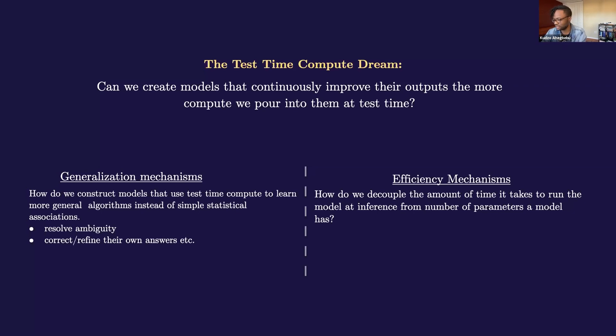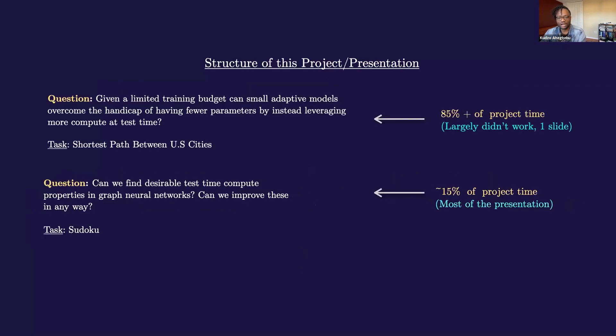Okay, so how did we tackle this question? The overwhelming vast majority of this project was actually spent on something I'll likely only spend a single slide talking about in the interest of time. And that's the shortest path task. The shortest path is a sequence-to-sequence modeling task in which I give the model a pair of tokens representing pairs of US cities, and I expect it to output a sequence of target tokens that represent the shortest path between the destinations. The stuff I'll mostly be presenting on only really took shape in the past three or four weeks, and it involved investigating some of these test time properties on graph neural networks operating over the game of Sudoku.